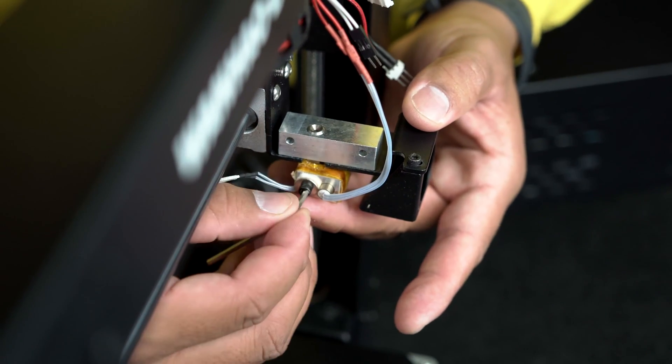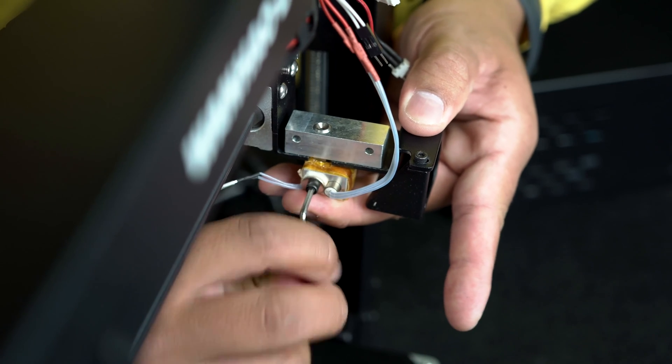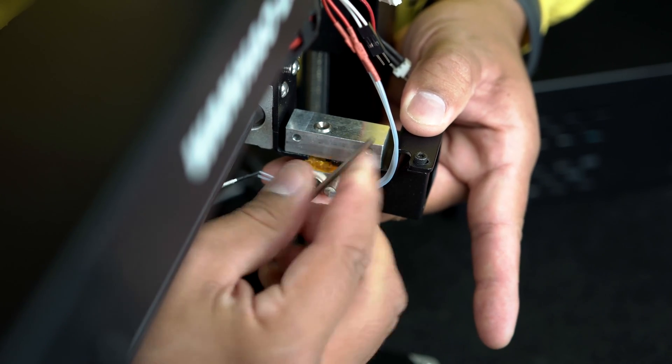Now grab your 2.5 millimeter hex key, insert it into the hex screw, and turn it counterclockwise until it comes loose.